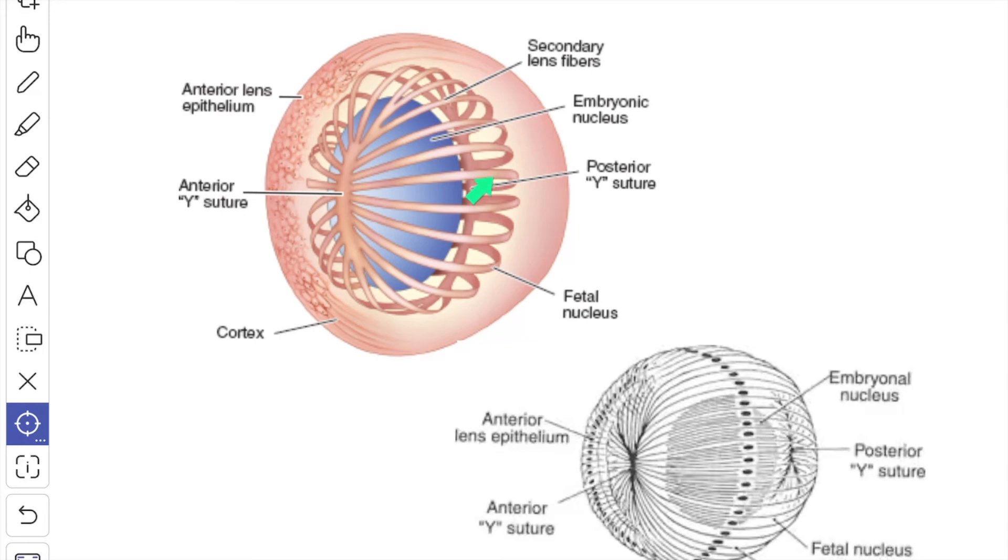The arrangement of the fibers is such that those which arise from the center of Y on one surface terminate in the extremity of the Y on the opposite surface and vice versa. The Y-shaped suture can be seen in vivo by slit lamp microscope.